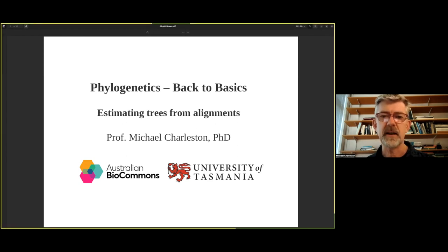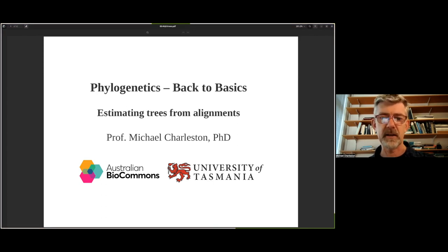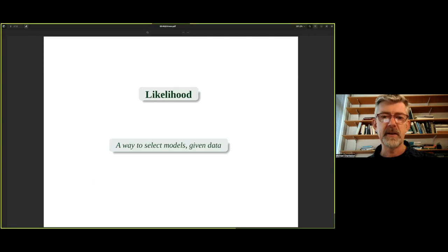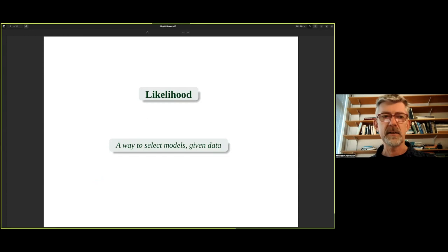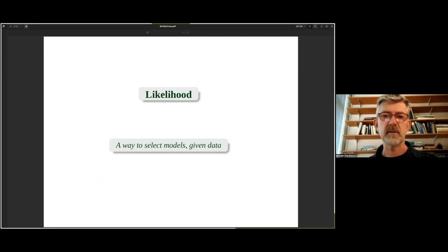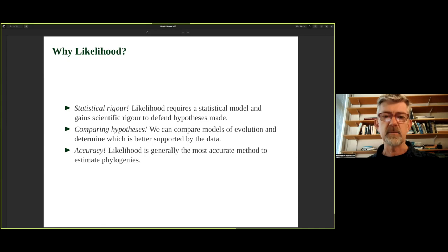Welcome back. This is the fifth accompanying video for the tutorial on phylogenetics factor basics. Now I'm going to talk about maximum likelihood as the way to estimate trees from our alignments. Likelihood might be a new concept for you — you can think of it as a way of selecting models given data. It's more sophisticated than simple probability, but that's a good way to start thinking about it.